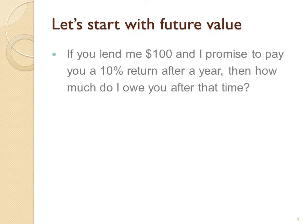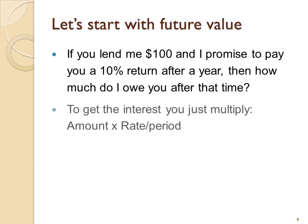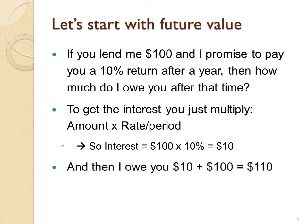Now if you were to lend me $100 and I promise to pay you a 10% return after one year, then how much would I owe you after that time? Well, you would calculate the interest simply by taking the amount times the rate per period. So the interest would be $100 times 10% equals $10. So then I would owe you the $10 plus the $100 back. Remember of course I owe you the $100 as well. The answer is not I owe you $10. I owe you $110.